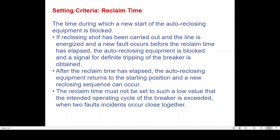If a reclosing shot has been carried out, the line is energized, and a new fault occurs before the reclaim time has elapsed, the autoreclosing equipment is blocked and a signal for definite tripping of the breaker is obtained. That means if there is a permanent fault or a fault within the reclaim time, your autoreclosure relay will issue a three-phase trip command. The second fault may be in any phase — Y, B, or R — but the autoreclosure relay will directly issue a three-phase trip command and the breaker will be in the lockout stage. After the reclaim time elapses, the autoreclosure equipment returns to the starting position and a new reclosing sequence can occur.